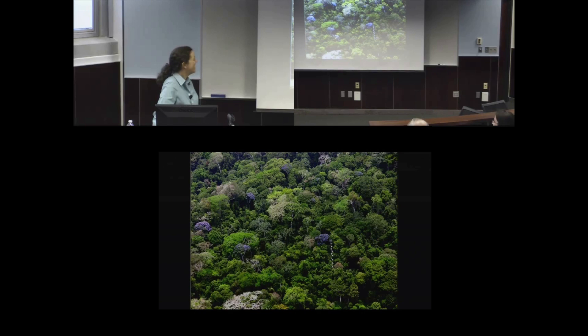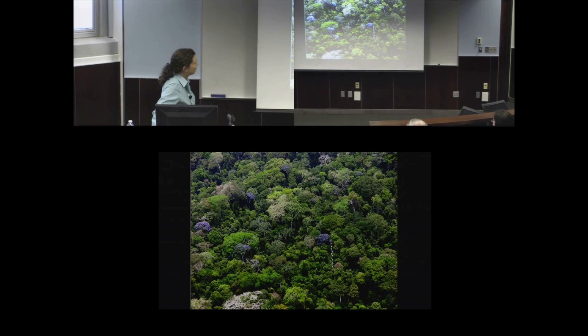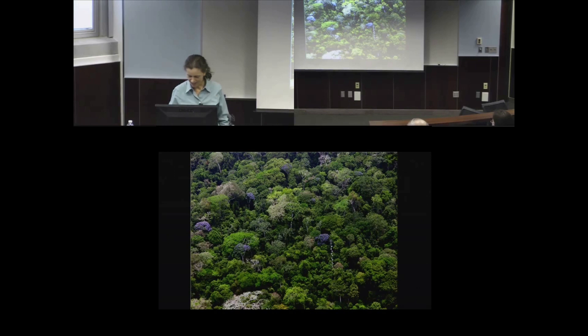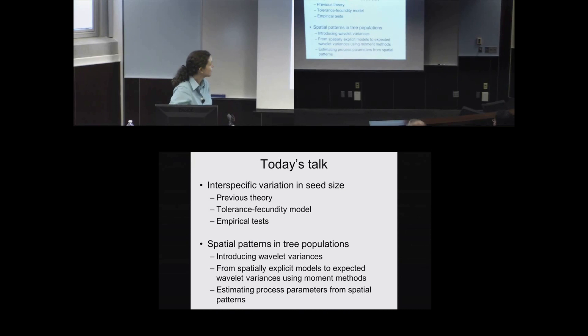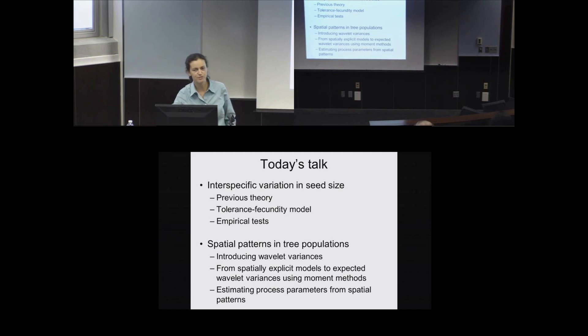This is a photo of the forest on Barro Colorado Island, Panama, and you can see there are different species there. One of them, Jacaranda, happens to be flowering in that photo. Tropical forests are renowned for their species diversity, so the issue of species coexistence is always on our minds. The first part of my talk is about understanding interspecific variation in seed size, discussing previous theories, the tolerance-fecundity model I developed, and empirical tests of different models.